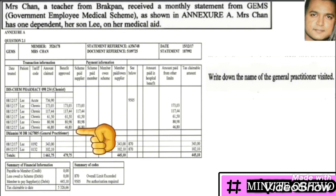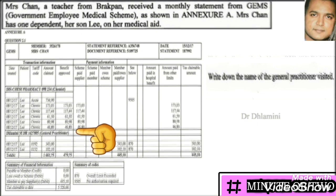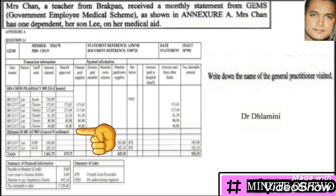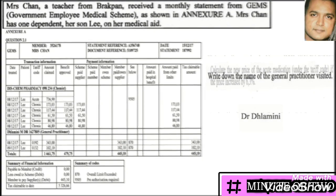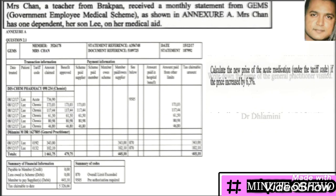Write down the name of the general practitioner visited. This can be found towards the bottom rows of the table, and you'll find it is Dr. Chlamini.